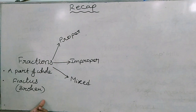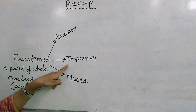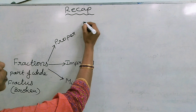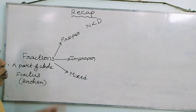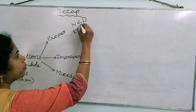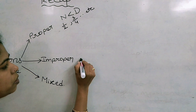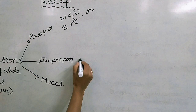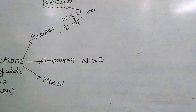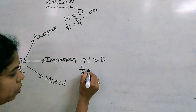You also learnt about different types of fractions: proper, improper, and mixed. In a proper fraction, the numerator is less than the denominator - for example, 1 by 2, 3 by 4, etc. What is an improper fraction? Just opposite to this - the numerator is greater than the denominator. For example, 4 by 3, 7 by 5, etc.